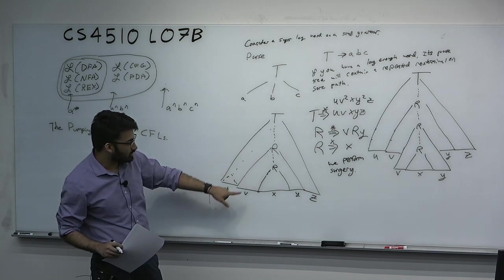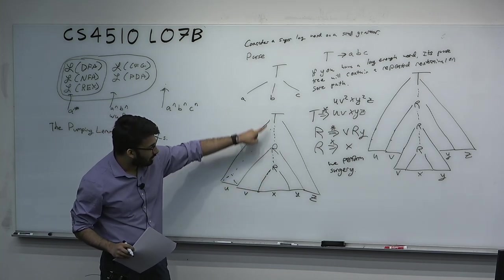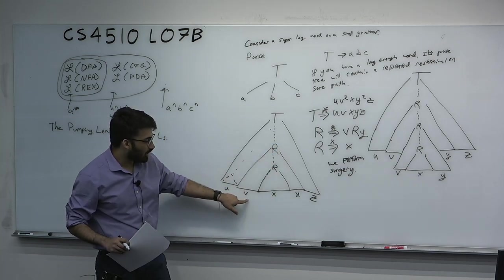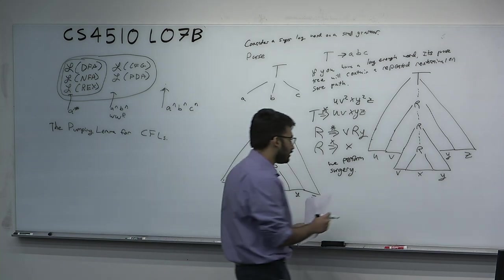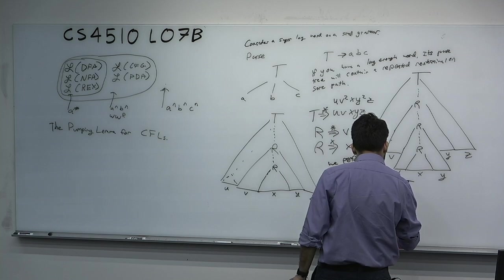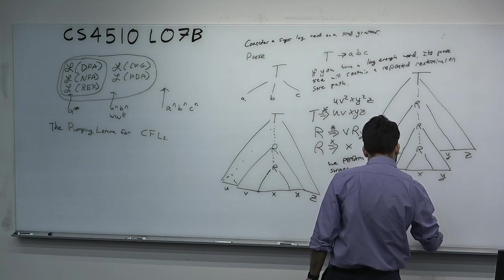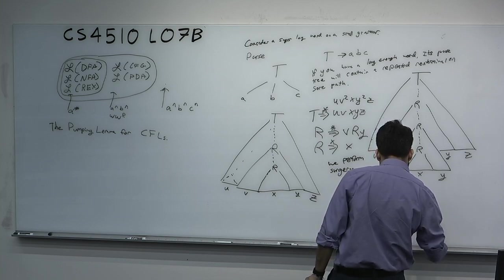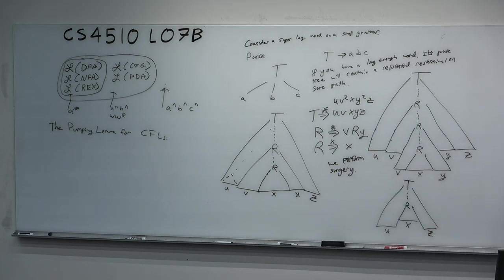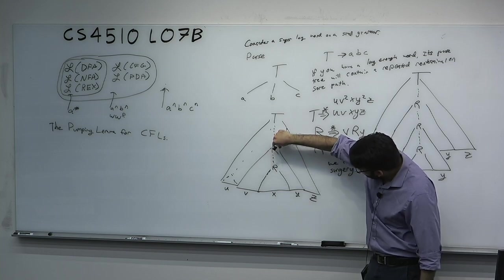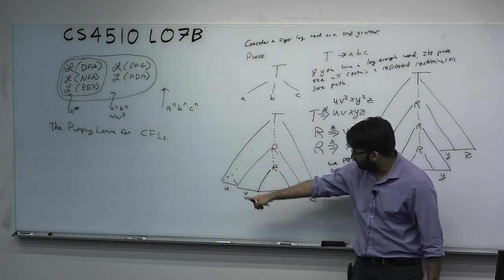We can go T to R to R, which was necessary to produce VXY. Or instead, we can go T directly to R — we delete the intermediate step and copy the bottom, so we get UXZ. This is the same surgery: cut the tree, copy part of it, paste and delete the rest.